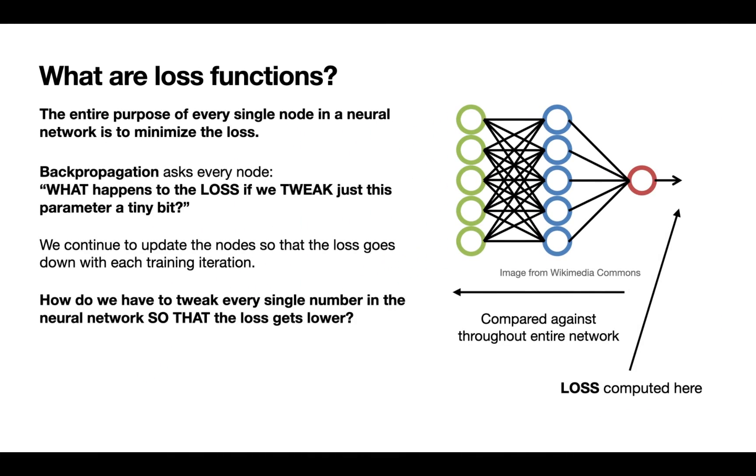So how does this work? Backpropagation is the algorithm we use to update the model throughout training. Backpropagation asks one question over and over. It says to every weight and every parameter in the network, what happens to the loss if we tweak this parameter a tiny bit? We want to tweak it in such a way that the loss goes down for each training iteration.